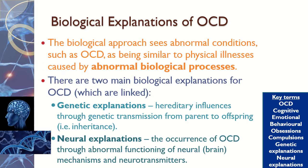The biological explanation of OCD is split into two parts. There's a genetic explanation, thinking about genes and inheritance from parents, and then also the neural explanation — the abnormal functioning of the brain and the mechanisms within it, including neurotransmitters and neurons.